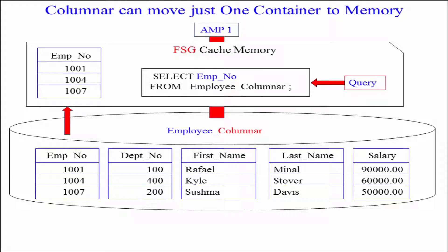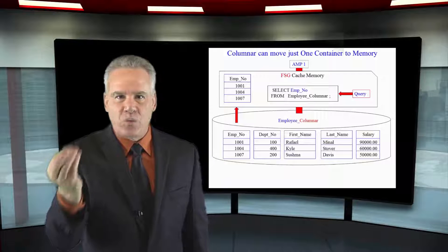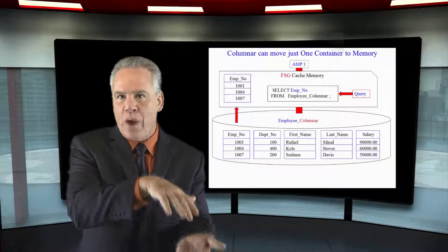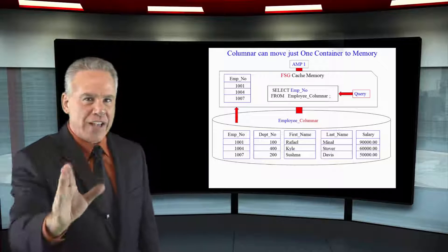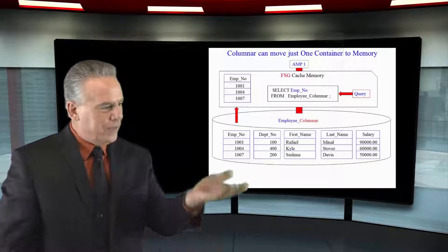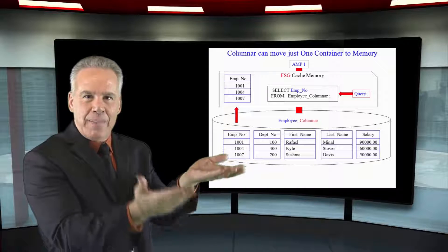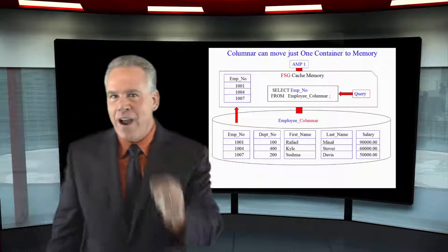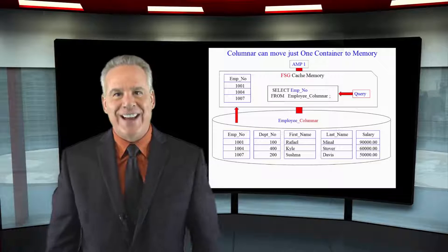And that's the idea behind columnar. When somebody writes a query and says, 'just select EMPNO from the employee table,' they're just looking for one column. Instead of having to move the entire block, they just move the EMPNO container. It's so much thinner, less movement involved, a lot less traffic on the network, so much faster to move in, and it leaves so much more room in memory for other things. In a lot of environments, you just can't beat this kind of design.